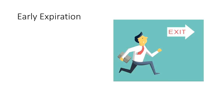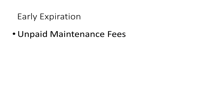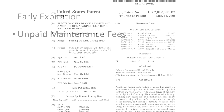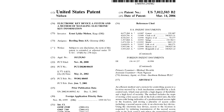Sometimes a patent can go out of force earlier than the 20 years. The most common way this typically happens is with unpaid maintenance fees. Recall that to keep a patent in force, maintenance fees need to be periodically paid. If they are not paid, the patent goes out of force.